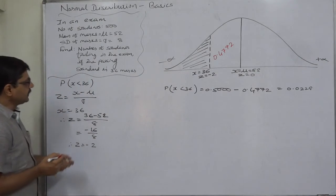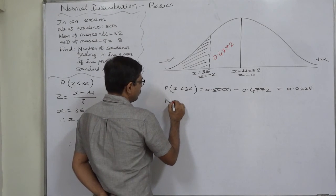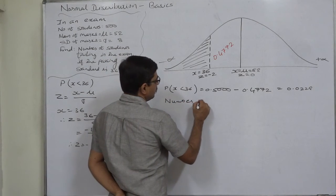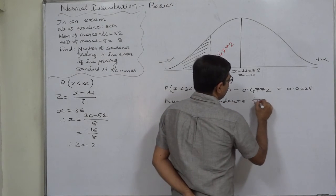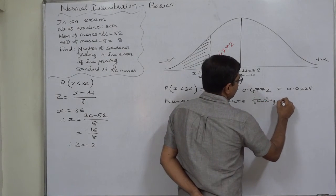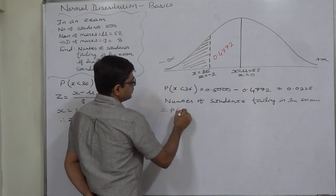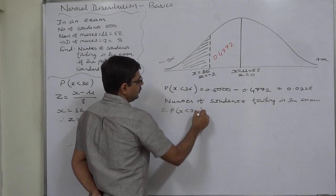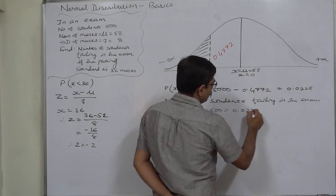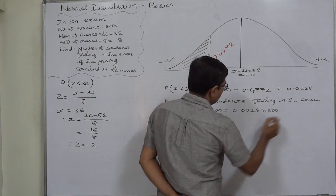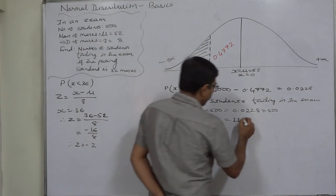Now we are actually interested in the number of students, not the probability only. Number of students failing in the exam equals probability of X less than 36 into total number of students: 0.0228 into 500. It comes to 11.4.